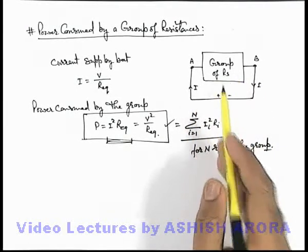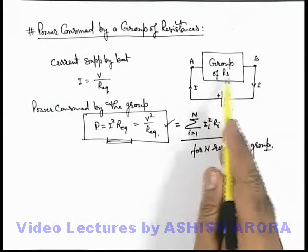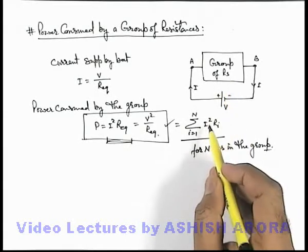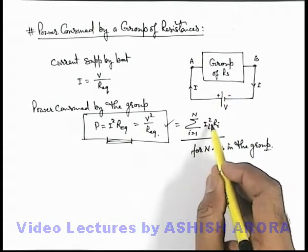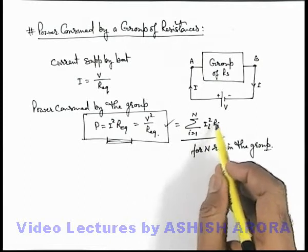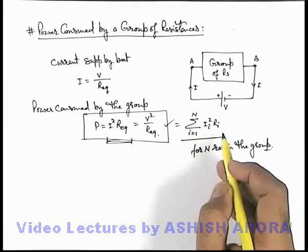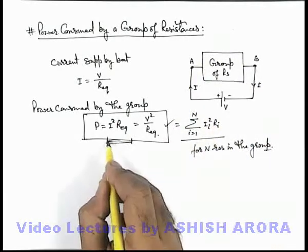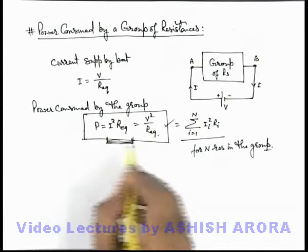If you calculate the current flowing through the individual resistances of the group and calculate the individual power consumed by each resistance, that is I squared R, and sum it up, the final result will be given by the same relation which we are calculating here.